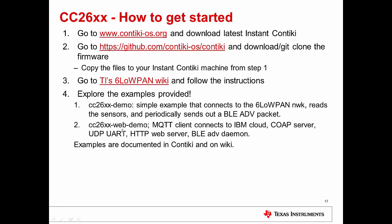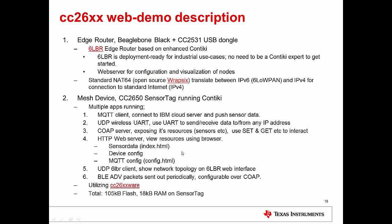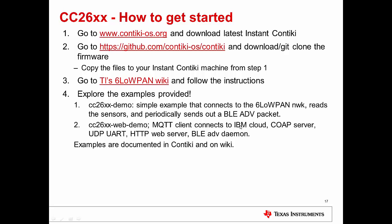Explore the examples provided — there are two demos applicable to CC2650 and CC1310 both. Using the respective platform toolchain in the make instruction, you can build for the respective platforms. A simple example connects to the 6LoWPAN network, reads sensors periodically, sends out a BLE advertisement packet, and is peer-to-peer. The CC2650 web demo runs an MQTT client connecting to IBM Cloud, a CoAP server, UDP UART, HTTP web server, and BLE advertisement — running five processes in parallel. Examples are documented in Contiki and on the Wiki.